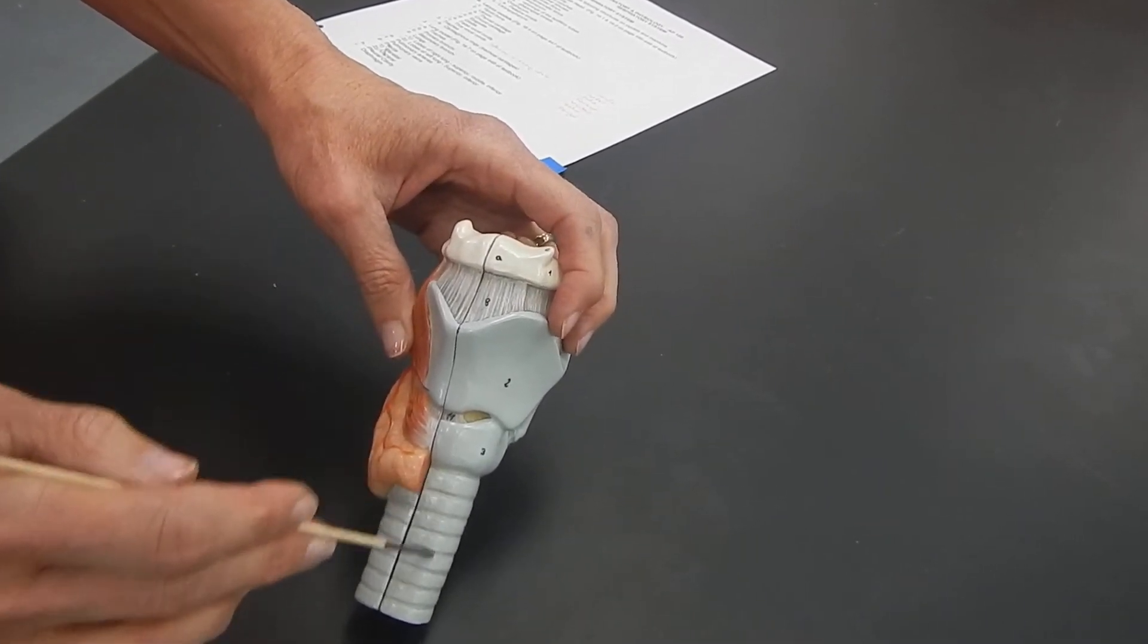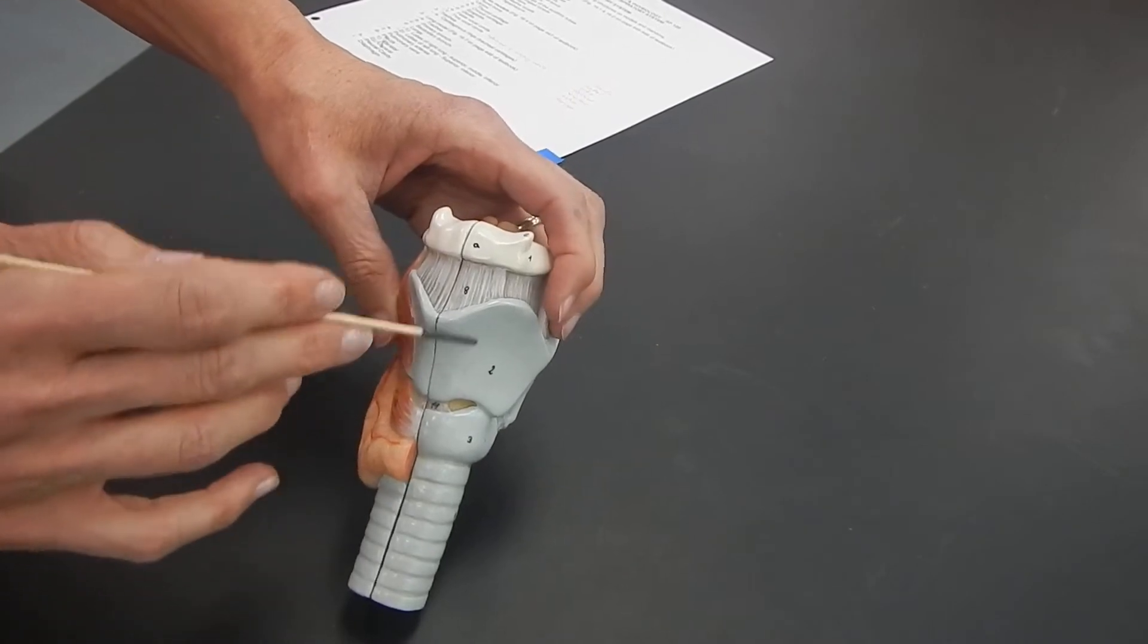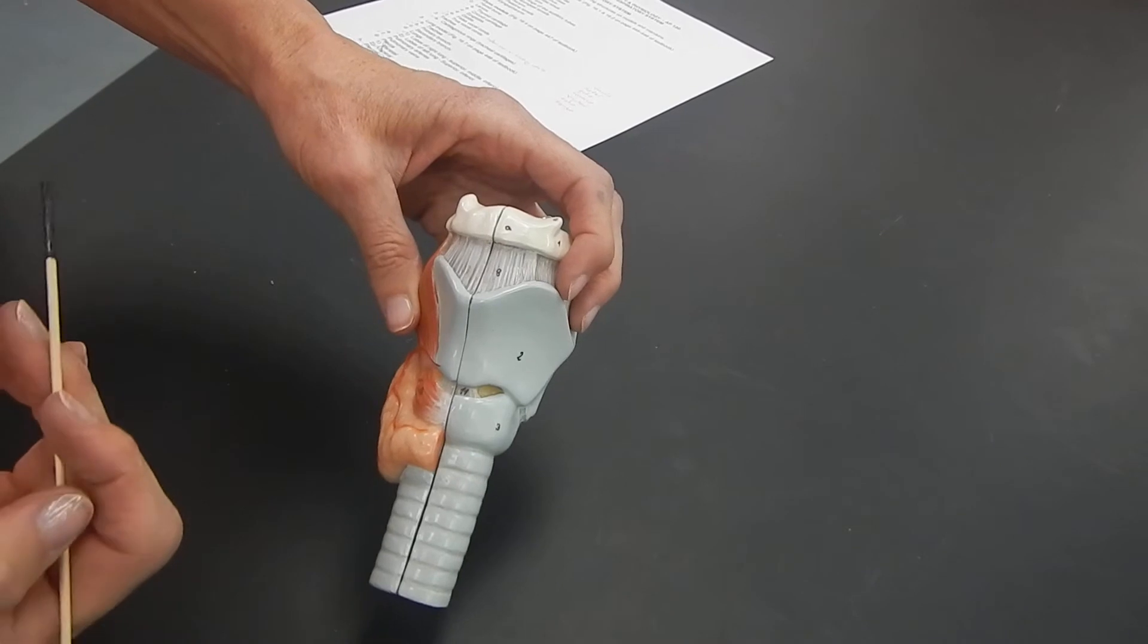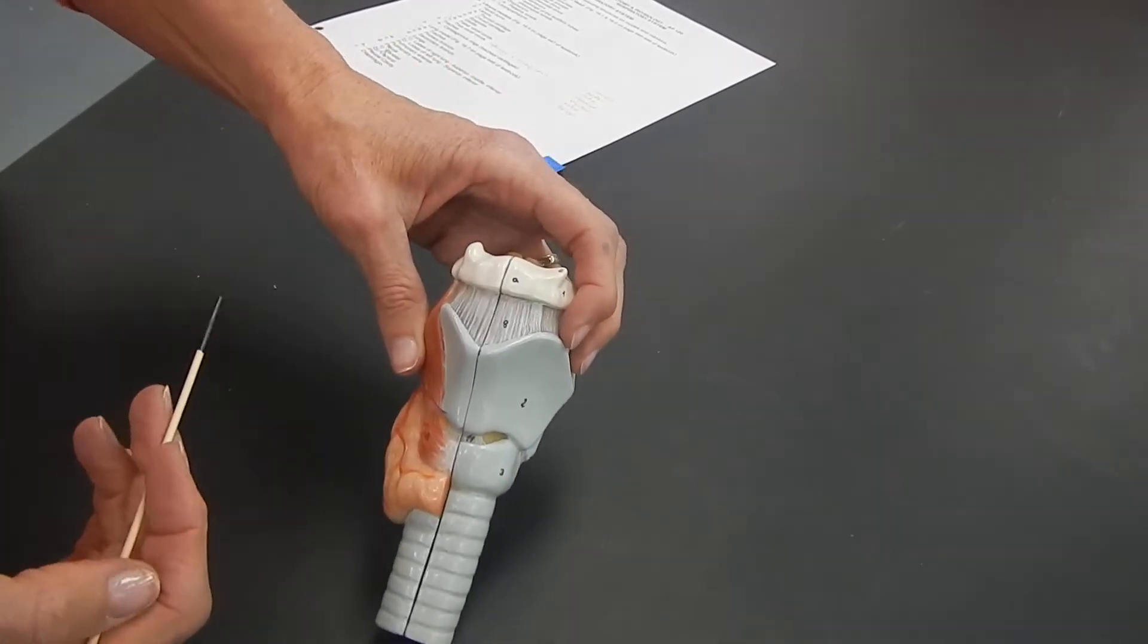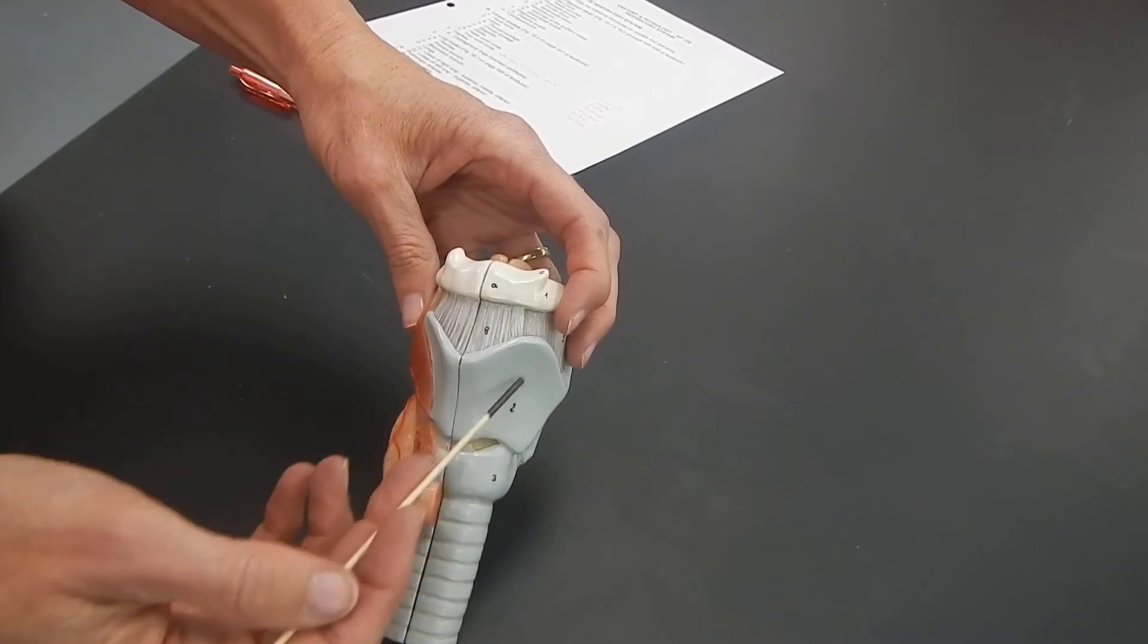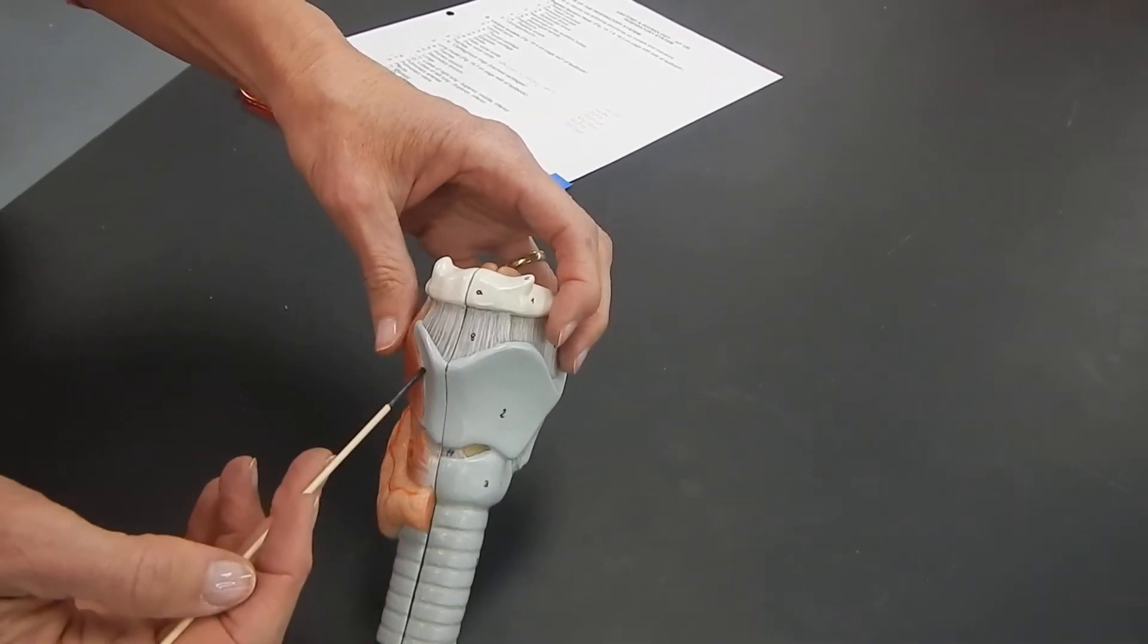The trachea is attached to the larynx, and the larynx is made out of many cartilages. The ones you need to know for 120 are the largest one here. This one is called the thyroid cartilage.